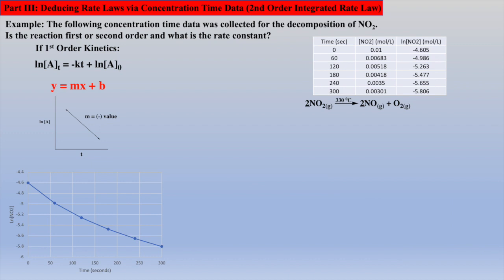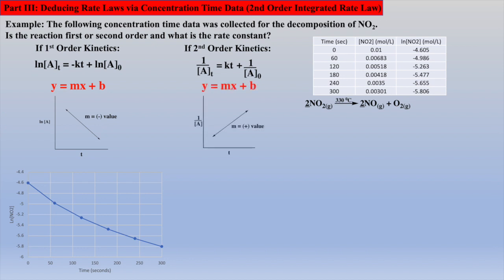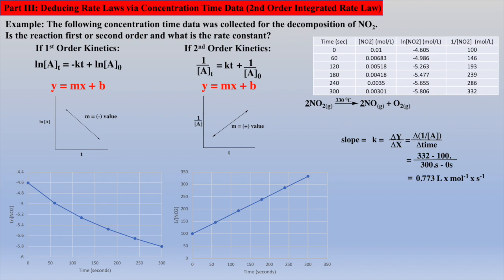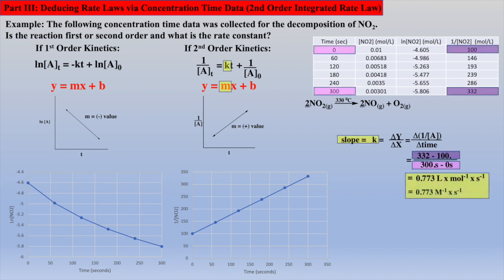Now we should check to see if the reaction follows second-order kinetics, where a plot of 1 over NO2 concentrations versus time will be a straight line. To do this, we create another column of data, 1 over NO2 concentration, and plot it against time. Clearly this is a straight line. Calculating the slope of this line gives the rate constant, which is accomplished using the first and last data points to yield 0.773 liters per mole seconds, or simply 0.773 inverse molarity inverse seconds.